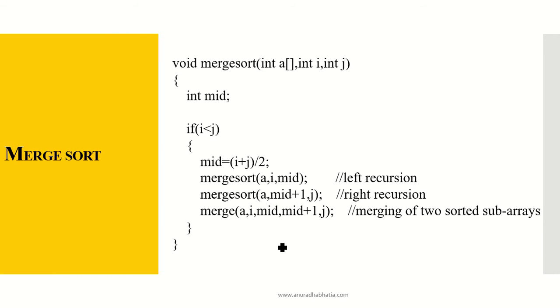Now this is the implementation of the merge sort. int A, int i and int j. So this is the array which is passing and these are the two variables which will be passed for the number of elements in array A and number of elements in array B and in array C. int mid, we find the mid of the array. If i is less than j, then mid is equal to (i + j) / 2.